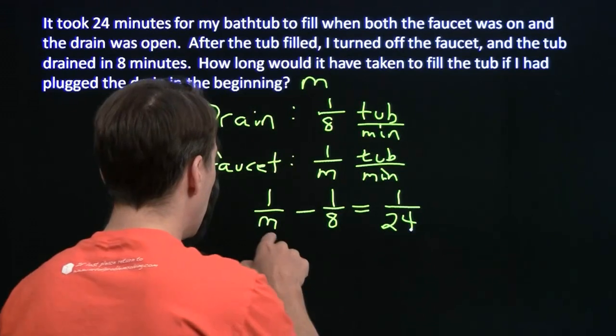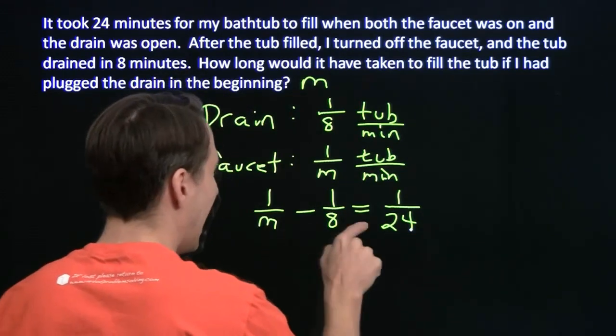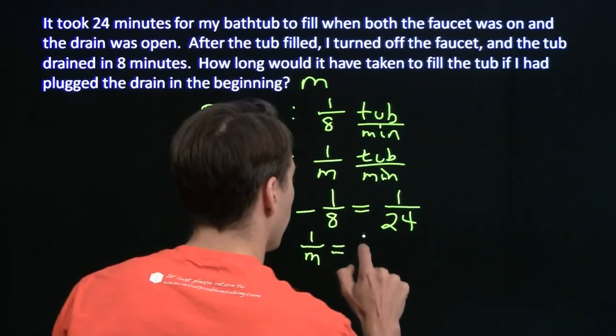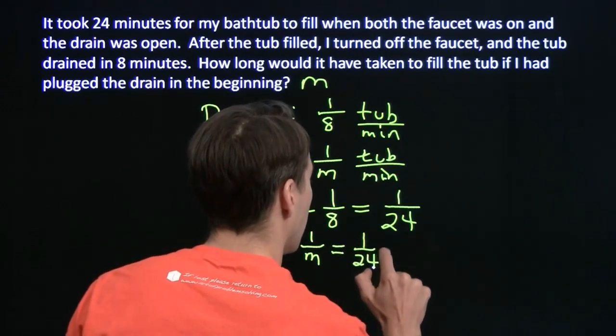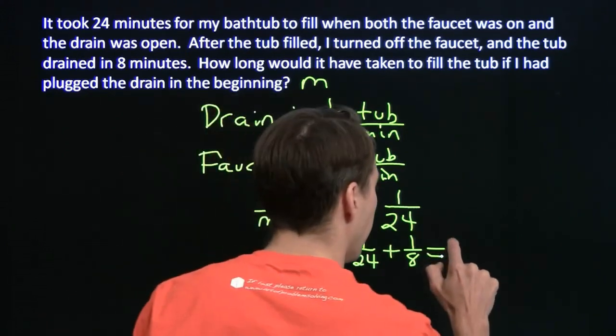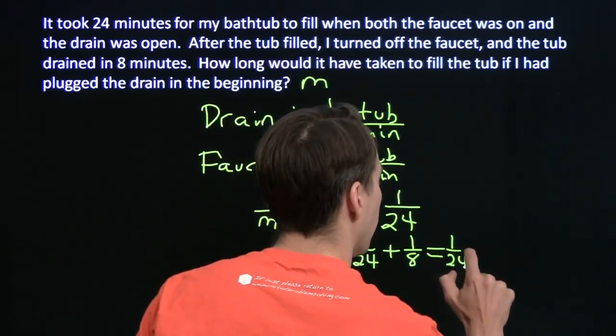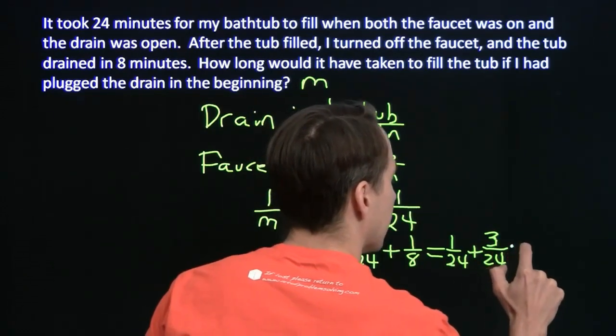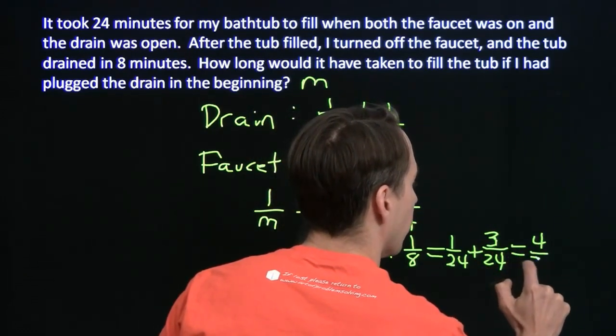So now I just have to find m. Well, we can isolate the variable here. I'm going to add one-eighth to both sides. One over m equals one-twenty-fourth plus one-eighth. Get a common denominator. Again, it's twenty-four. One over twenty-four plus three over twenty-four. That gives me four over twenty-four.